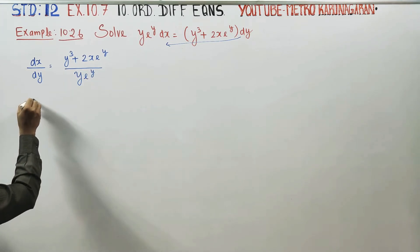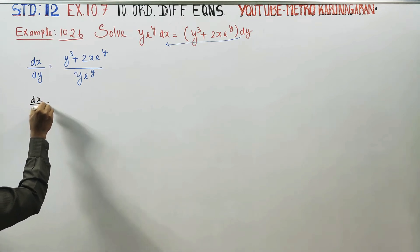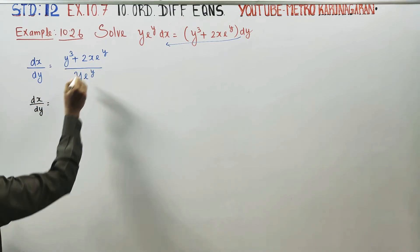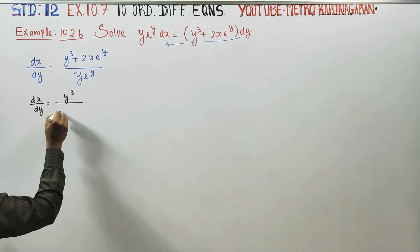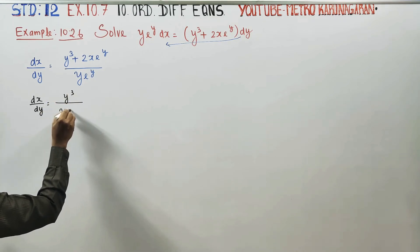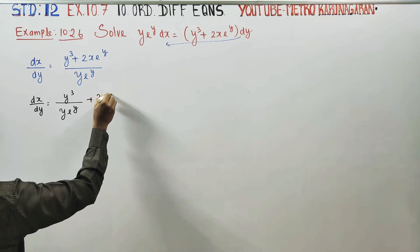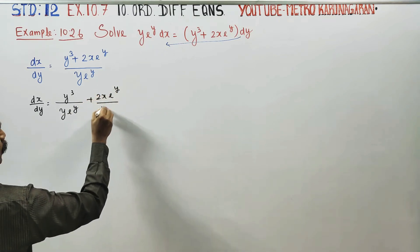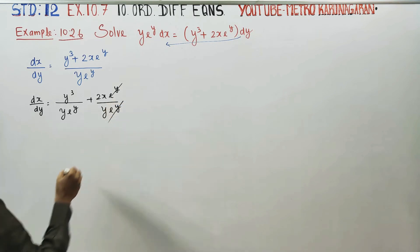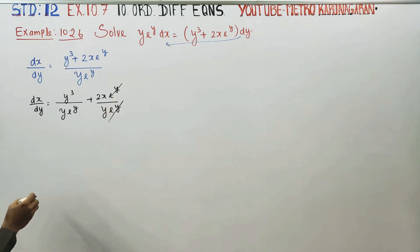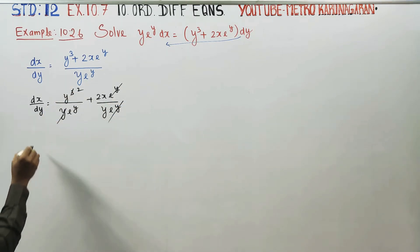Next stage: dx/dy = y³/(y·e^y) + 2x·e^y/(y·e^y). The e^y terms cancel, and y simplifies, giving y² in the first term.